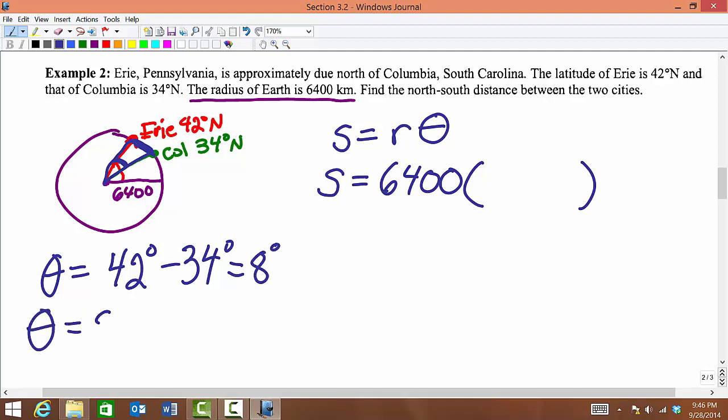Well, we don't want 8 degrees, we don't want degrees, we want radian measure. So we're going to multiply by pi over 180 degrees.